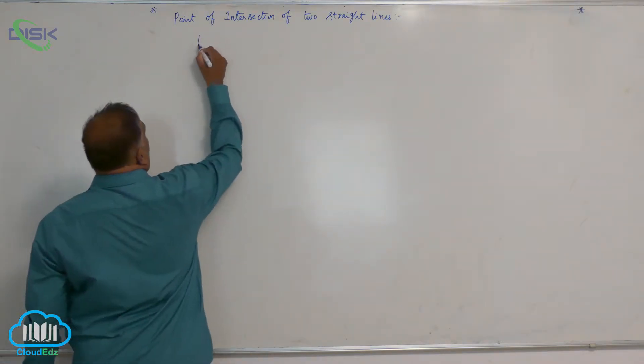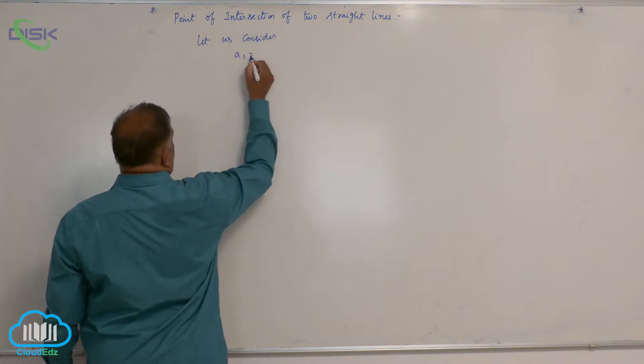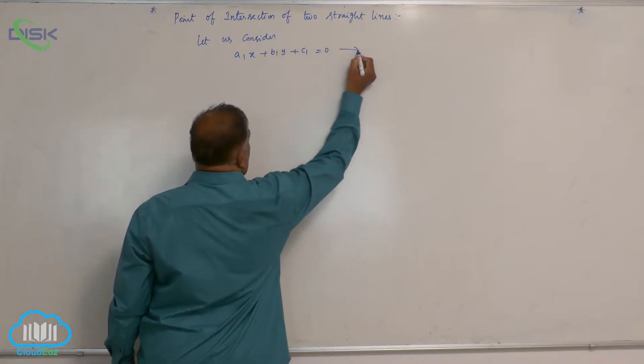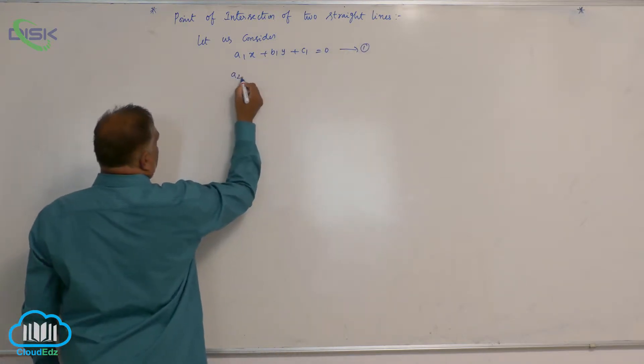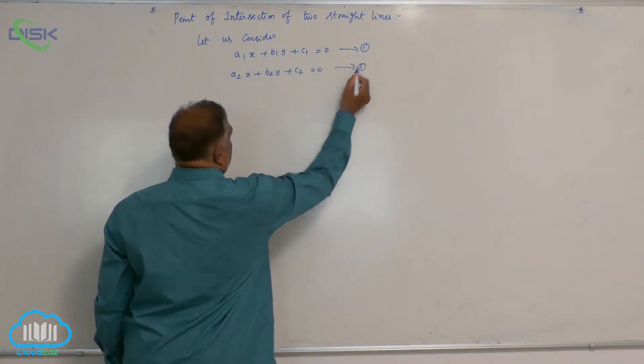Let us consider two straight lines: a1x plus b1y plus c1 equals 0, equation 1, and a2x plus b2y plus c2 equals 0, equation 2.